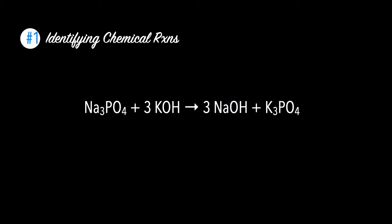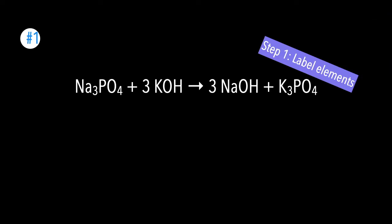Now that we're done with the mini lecture, let's go ahead and do problem number one, identifying chemical reactions. We have the following equation: Na3PO4 plus 3KOH gives you 3NaOH plus K3PO4. There are two steps to solving these problems. Step number one is you're going to label all elements.